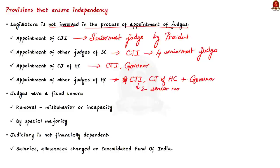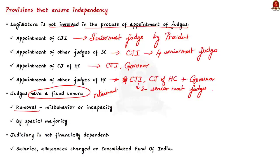Read more about the Three Judges Case for clear understanding. The second point is that judges have a fixed tenure — they hold office till the age of retirement. Only in exceptional cases may judges be removed; otherwise they have security of tenure, which ensures that judges could function without fear or favour. The constitution prescribes a very difficult procedure for removal of judges. The constitution makers believed that a difficult procedure of removal would provide security of office to members of judiciary.